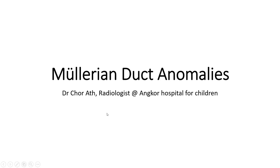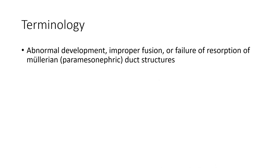Hello everyone. Today I am going to show you about Müllerian duct anomaly. Müllerian duct anomaly is an abnormal development in proper fusion or failure of the resorption of Müllerian duct structures.